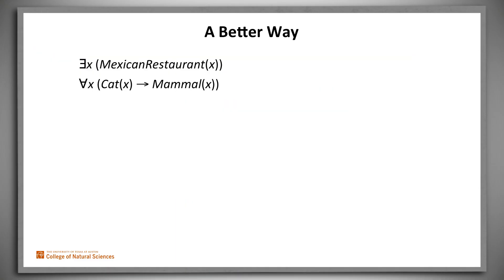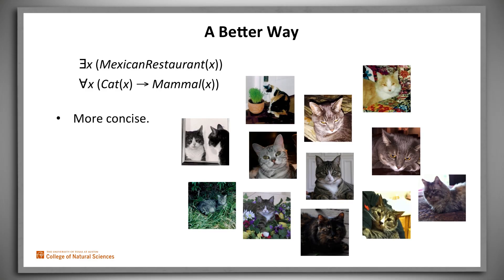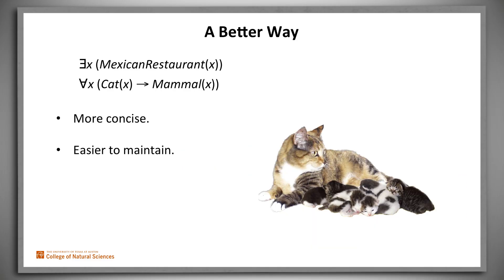The quantified expressions we've just written are better than the large disjunction and conjunction in several important ways. First, and most obviously, they're a lot more concise. They're also much easier to maintain — for example, as new cats appear, we don't have to go back and add an explicit mention of each of them.